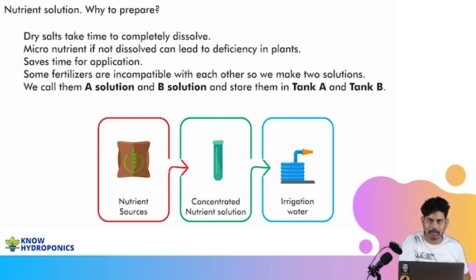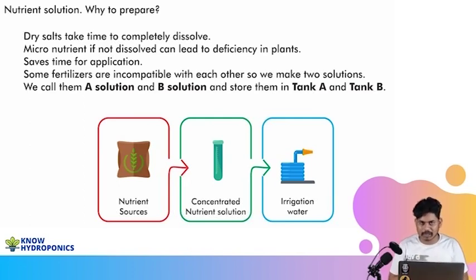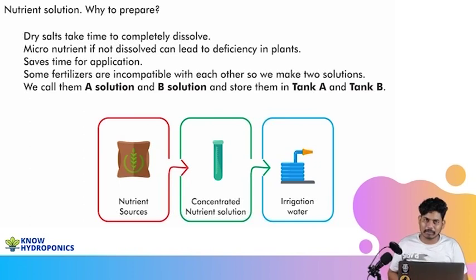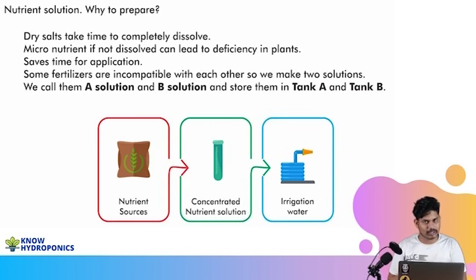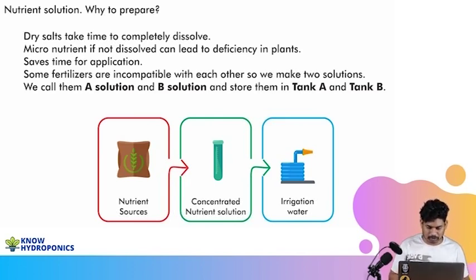To solve this problem, we create Tank A for nitrate-based solutions and Tank B for sulfate-based solutions. All nitrate-based solutions go into Tank A, all sulfate-based solutions go into Tank B. Micro elements can be added into either Tank A or Tank B — at our farm we generally add them into the Tank B solution. This is the formula for Tank A and Tank B formation.